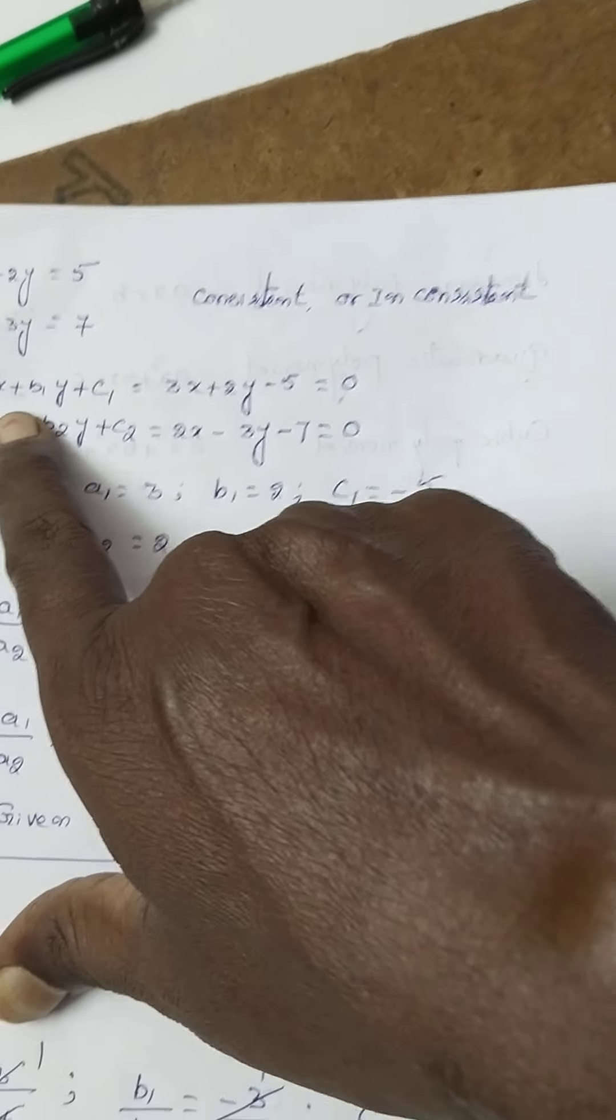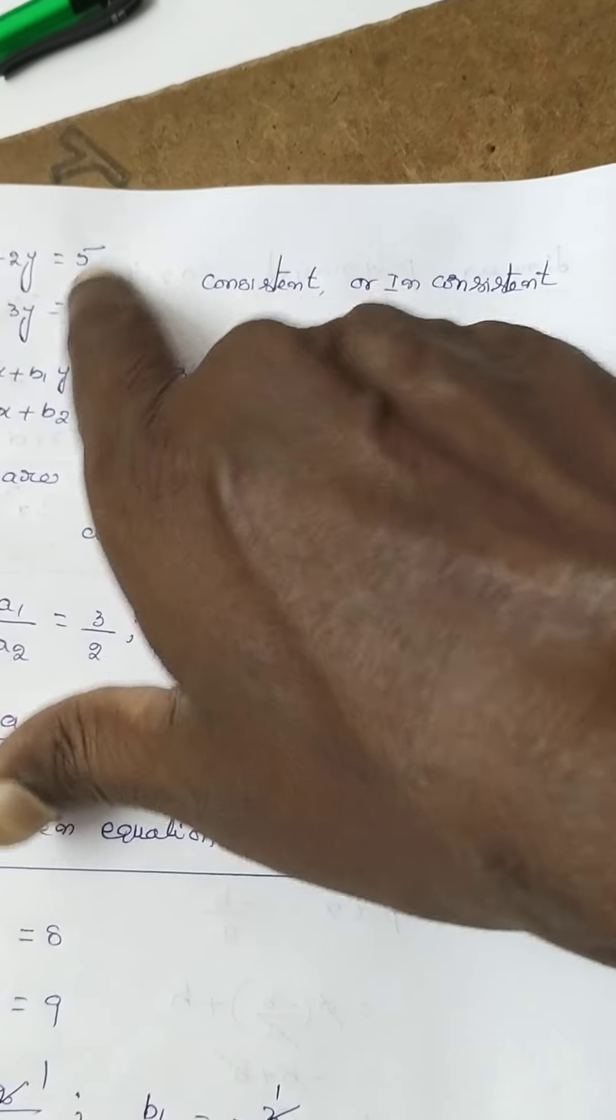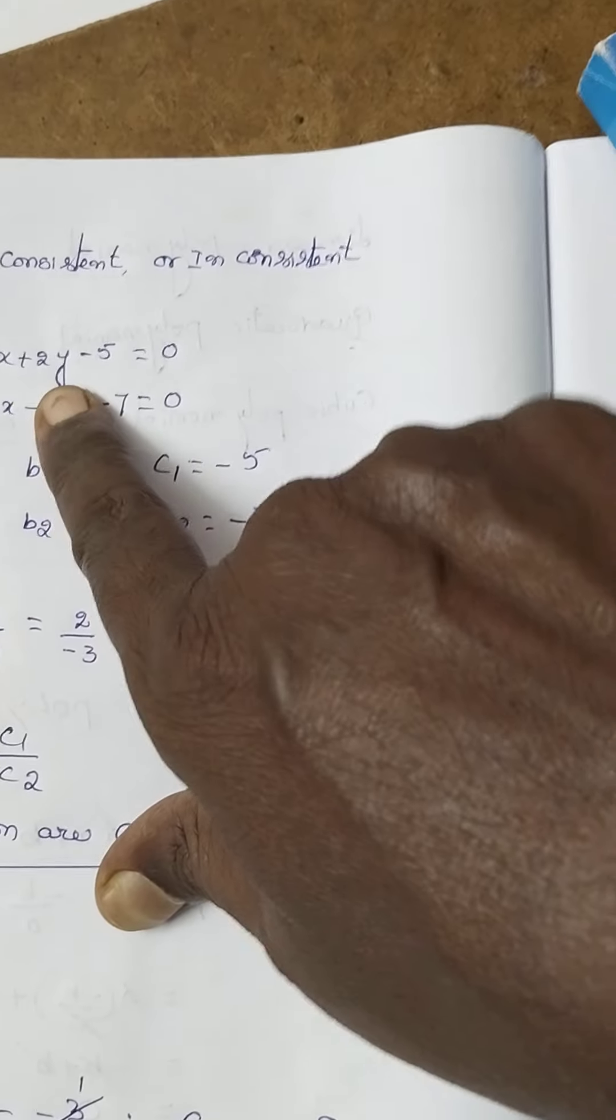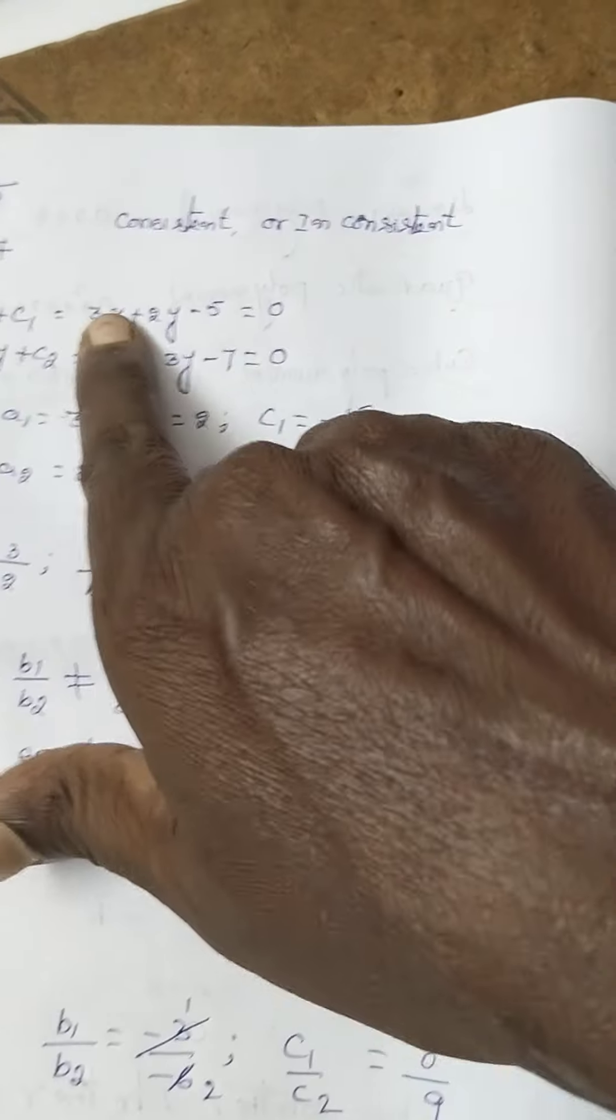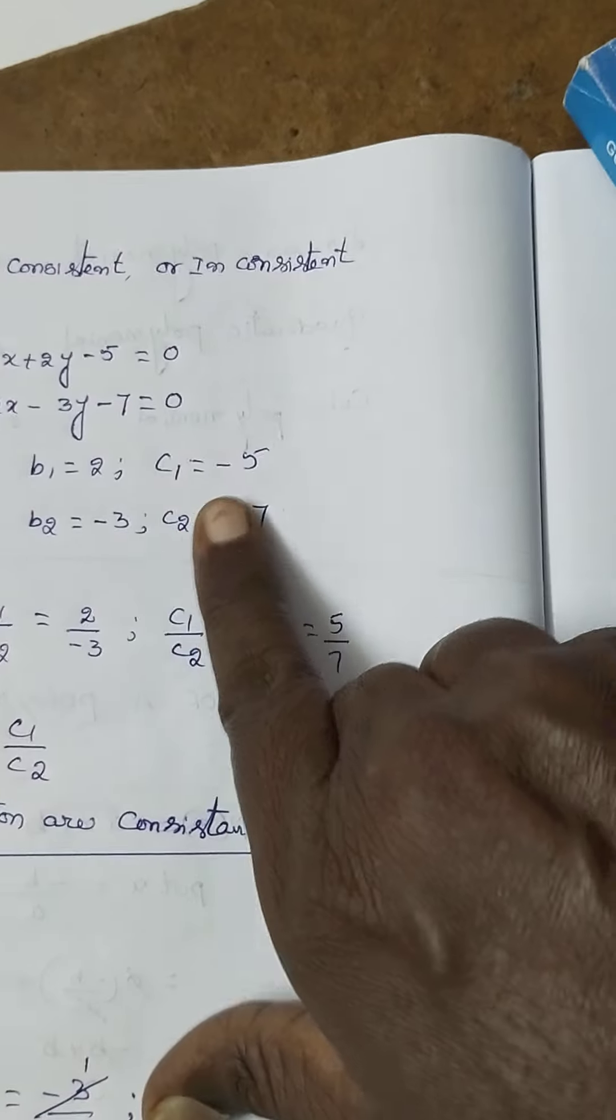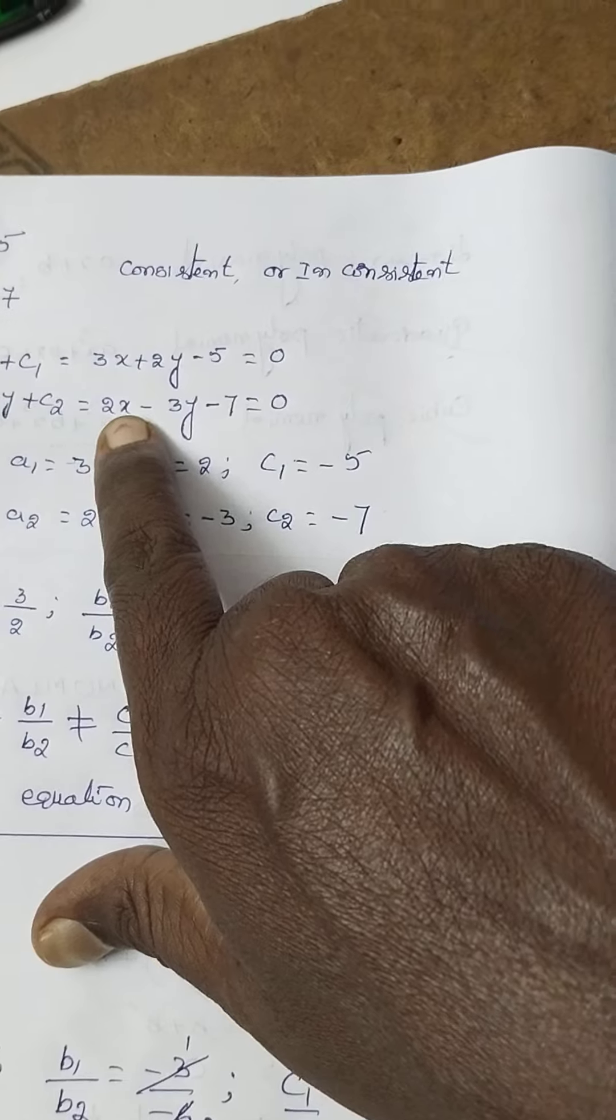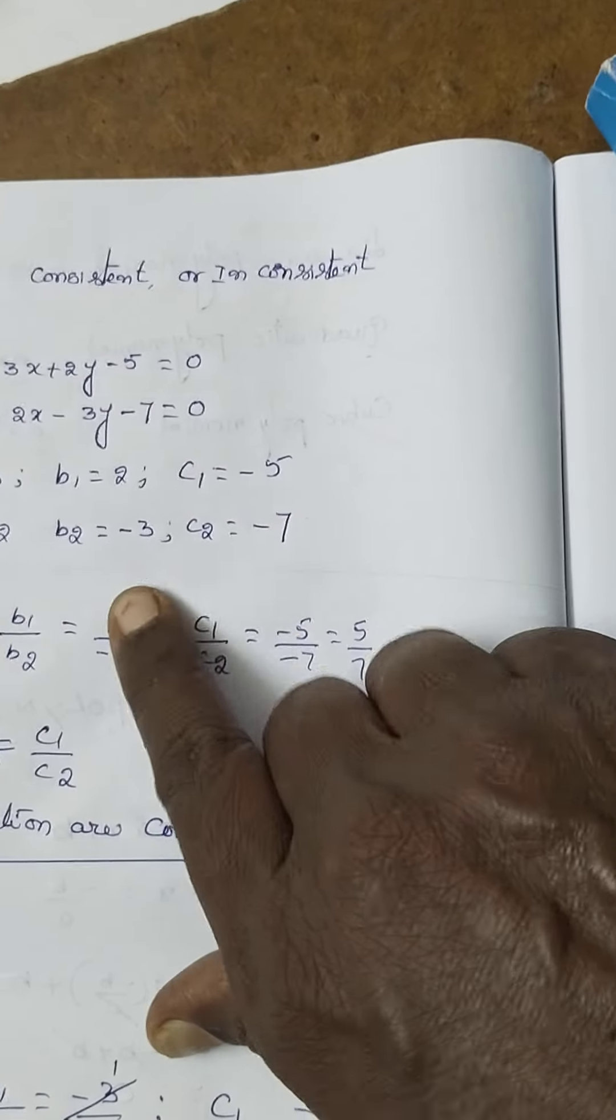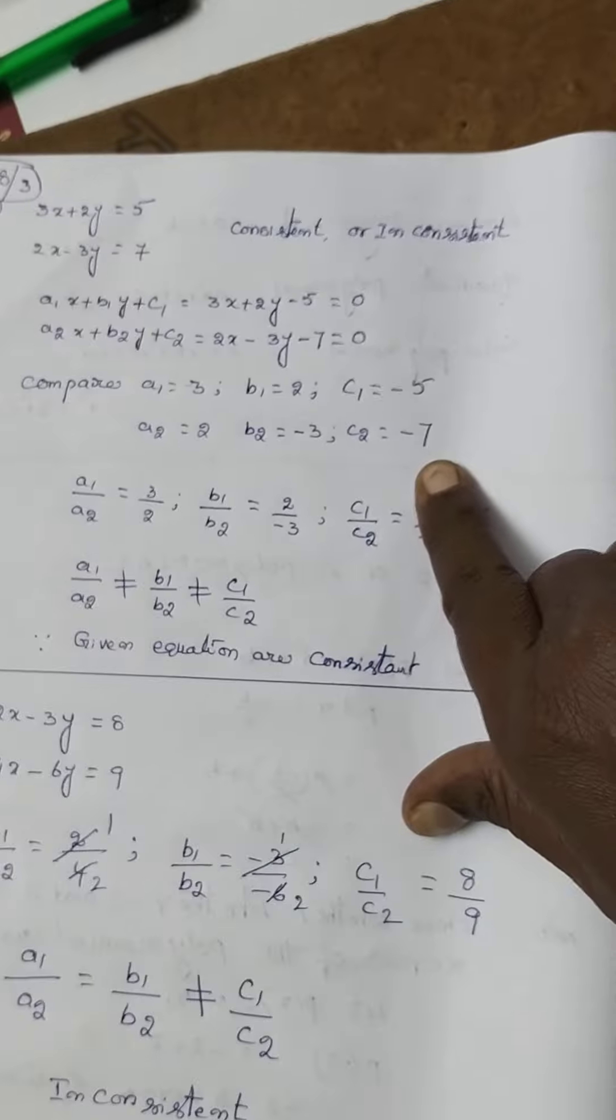So general equation first, A1x plus B1y plus C1 is equal to the equation, 3x plus 2y minus 5 is equal to 0. Both are equal. So compare: A1 is equal to 3 and B1 is equal to 2, C1 is equal to minus 5. And A2 is equal to 2 and B2 is equal to minus 3, C2 is equal to minus 7.